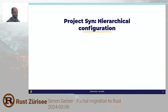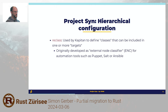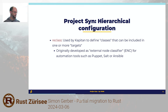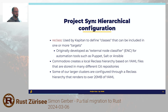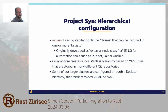ProjectSYN does hierarchical config management. For this we use reclass, which is used by Kapitan to define classes that you can include in one or more targets. This was originally an external node classifier which could be used for automation tools such as Puppet, Salt, Ansible. Commodore fetches a bunch of Git repos and creates a local reclass hierarchy by doing lots of symlinks based on YAML files stored in many different repos. The end result is when you render this reclass hierarchy for some of our larger clusters, you end up with like 20 to 25 megabytes of YAML if you actually write it out.